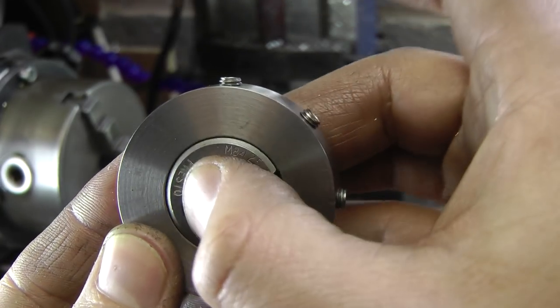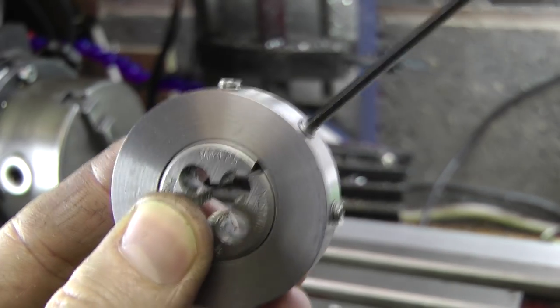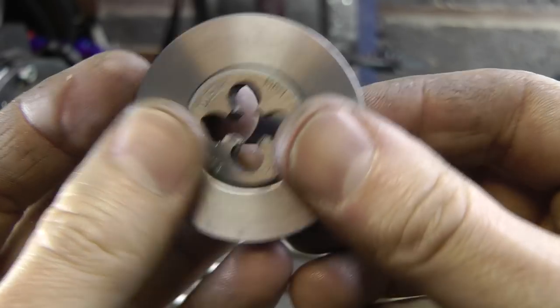The collar would now hold a die in place. The last job was to make a set of screws and handles to fix the collar to the brass outer.